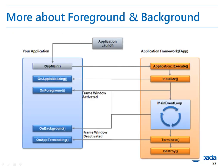This diagram shows the application status transition between the foreground and the background. If an application is launched, the application's entry point OSP main is called and OSP main executes the application. There is a part in the execute function that calls the initialize function, and the initialize function calls the OnAppInitializing function. Then, since the frame corresponding to the window of the application has appeared on top of the screen, the OnForeground function is called. After that, the system runs an event loop to check for events. If a situation to switch the application to the background occurs, the OnBackground function is called. If the application should run in the foreground again, the OnForeground function is called. Finally, the Terminate function of the application framework is called, which calls OnAppTerminating and the application is terminated.